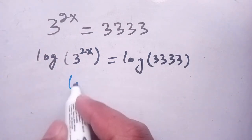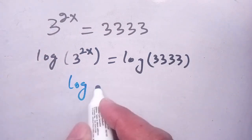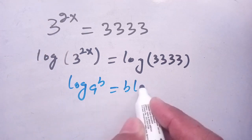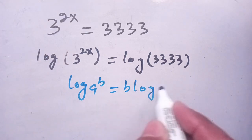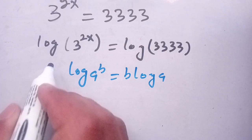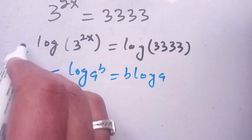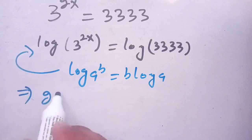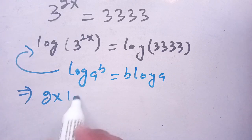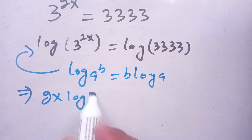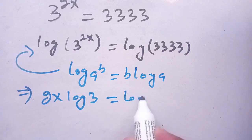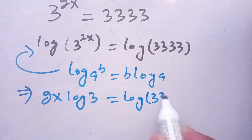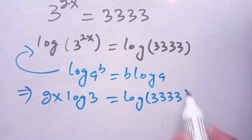By the logarithm identity, log of a to the power b is equal to b times log of a. Using this identity on the left hand side, we get 2x times log of 3 is equal to log of 3333.